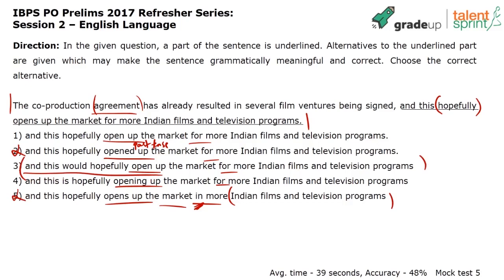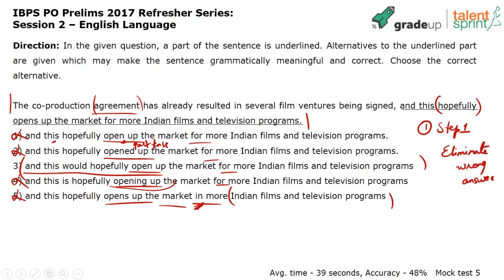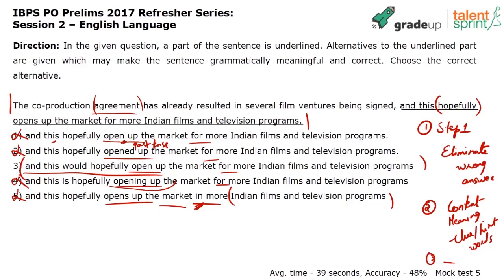What's wrong with 1 and 4? Option 4 — 'and this is hopefully opening up the market' — that's continuous tense, I don't need that. Option 1 — 'open up' — it should be 'opens up': 'and this' is a singular subject requiring singular verb 'opens.' The 's' is not there, so that's out. The clue word is 'hopefully.' Every time you have a context like this, step one: try to eliminate wrong answer options. Step two: look for clue words or hint words to identify the meaning. The answer is option 3.